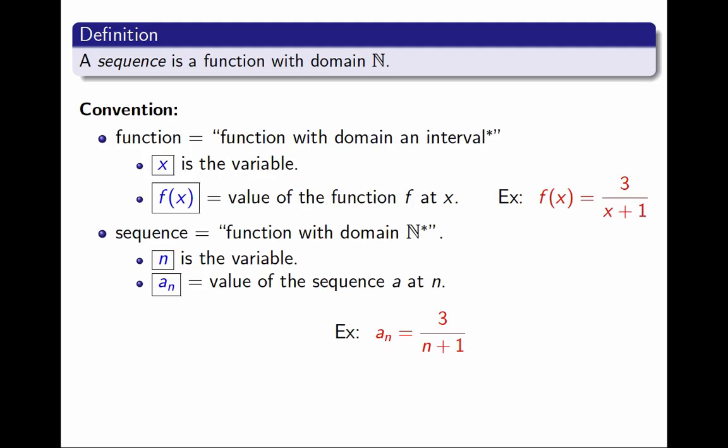In the second case, since n only takes natural values, then I can order all the terms, and I can say that the first few terms will be 3 over 1, 3 over 2, 3 over 3, and so on, which I could not do with the function.